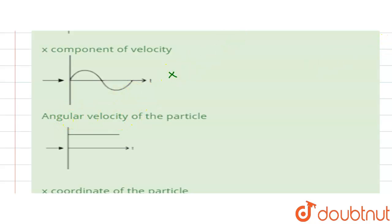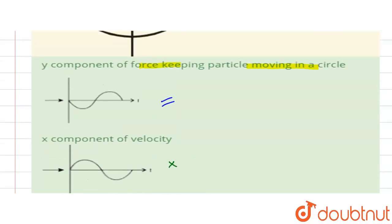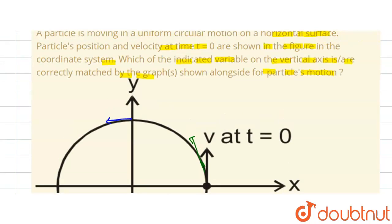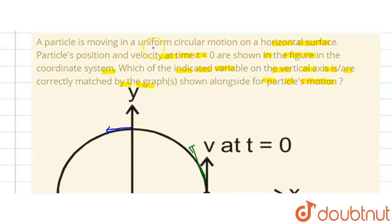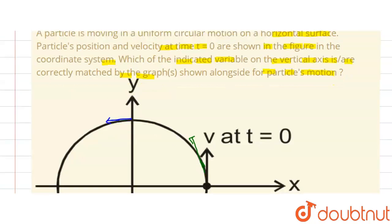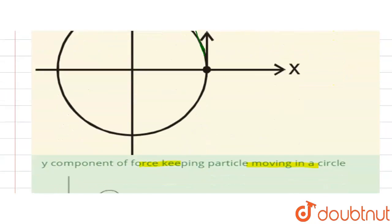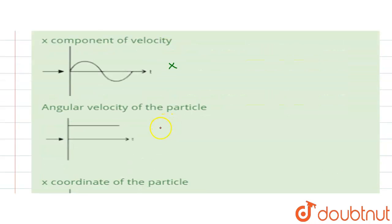And third one is the angular velocity of the particle. So in that case, angular velocity is always constant in uniform circular motion. So that means this is a constant. So here this is